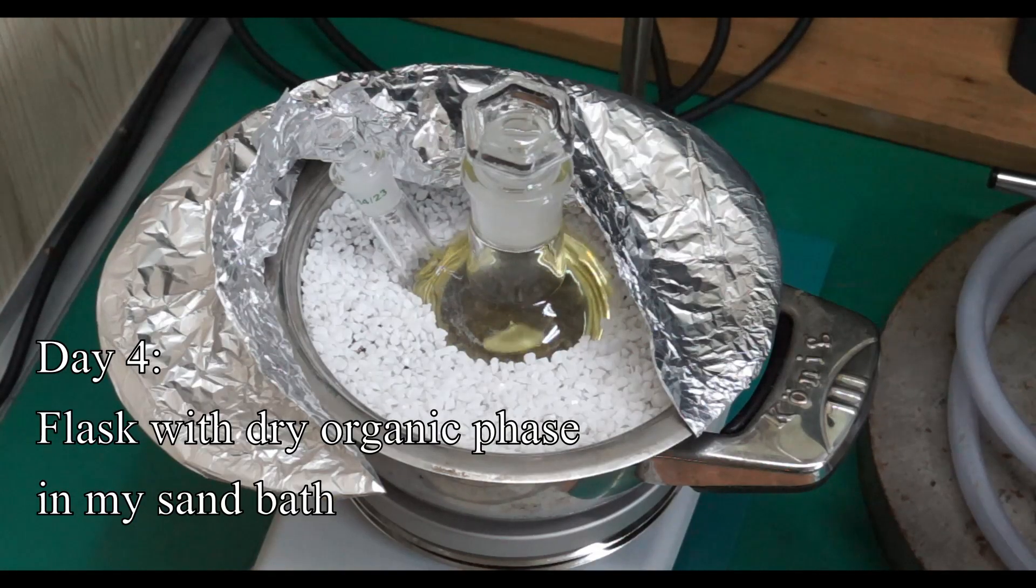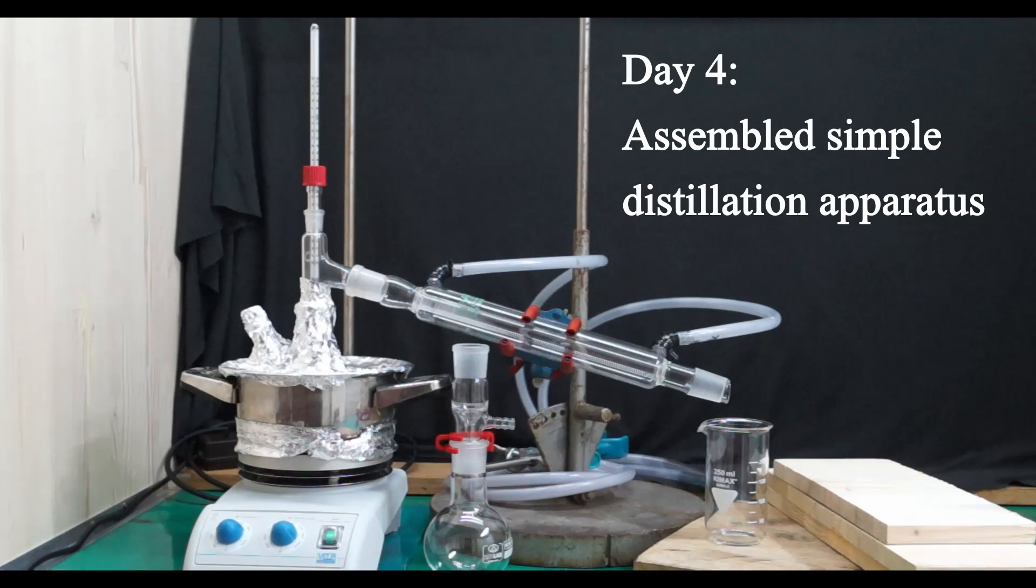I put the flask into a sand bath because an oil bath would smoke quite badly at the temperatures required to distill benzyl chloride. Next, I assembled glassware for a simple distillation. The 250 ml two-necked flask is sitting in a sand bath on top of a magnetic stirrer and heater. The side neck is not needed and is closed with a glass stopper.